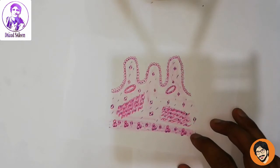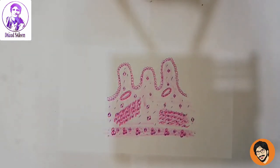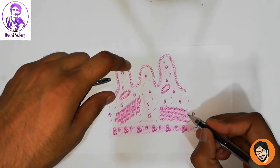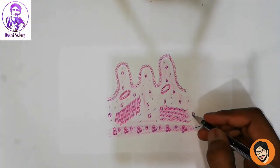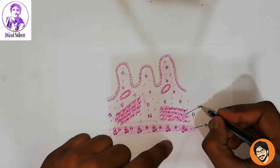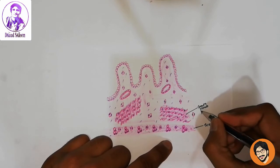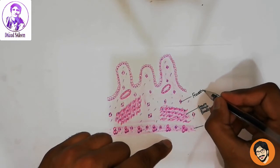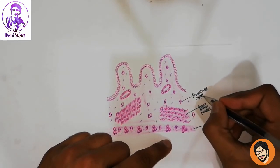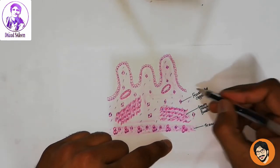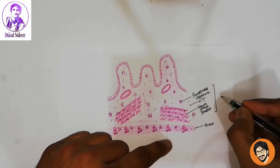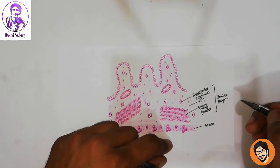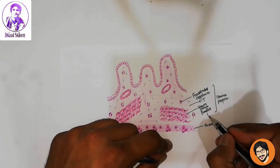Now your gallbladder diagram is completed. Let's make the labels. This is the serosa. These are the smooth muscle bundles. These are the fenestrated capillaries. And the rest of this is the loose connective tissue — it's the lamina propria. And the smooth muscle layer is the muscularis.